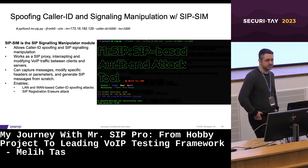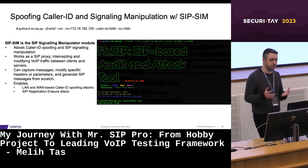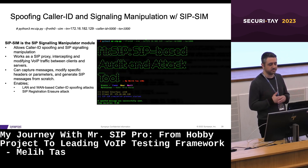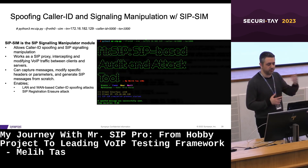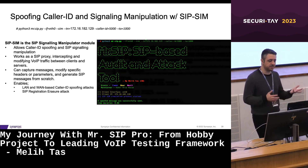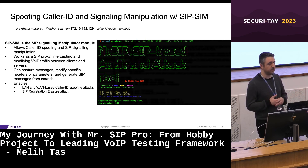We have SIP SIM, a signaling manipulator that can be used to spoof caller ID and manipulate SIP signaling. It works as a SIP proxy, intercepting Voice over IP traffic between clients and servers, capturing messages and modifying specific headers or parameters as needed before forwarding the modified message to the target server. It can also generate SIP messages from scratch and simulate a SIP client. With SIP SIM, it's possible to carry out internet-based or LAN-based caller ID spoofing attacks. Another example is the SIP registration erasure attack against call centers.